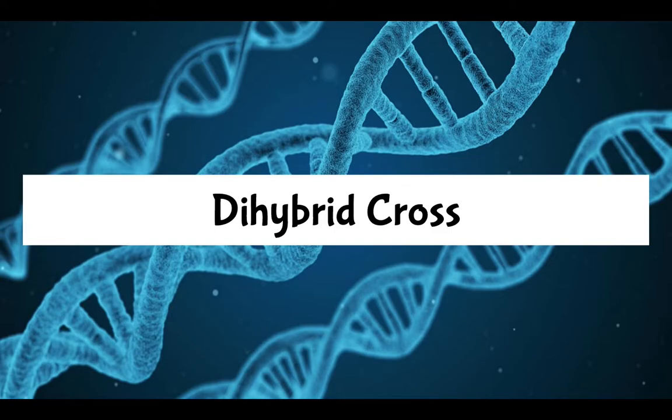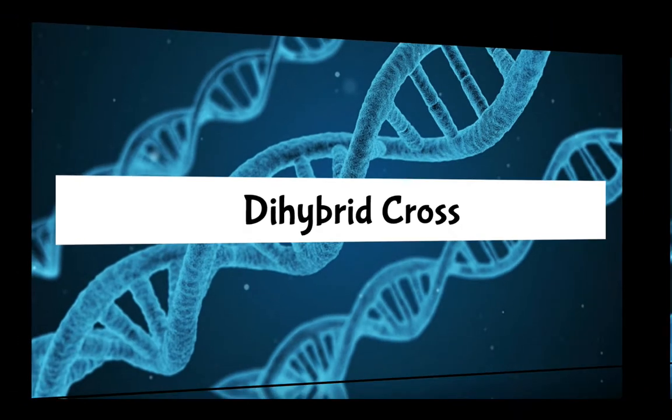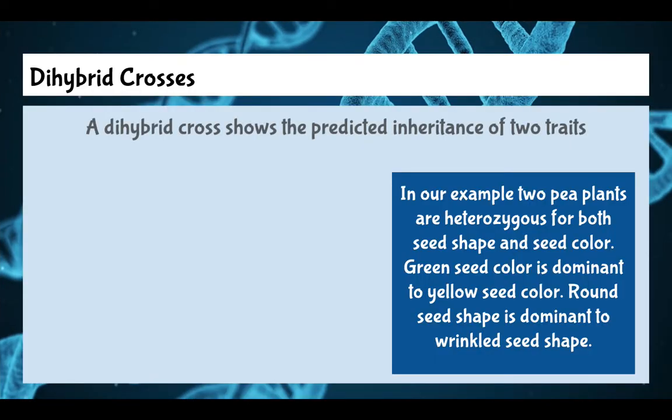This video is going to take you through what we call a monohybrid cross, mono standing for one trait. Now we're going to do a dihybrid cross. A dihybrid cross helps us predict the inheritance of two traits at the same time.